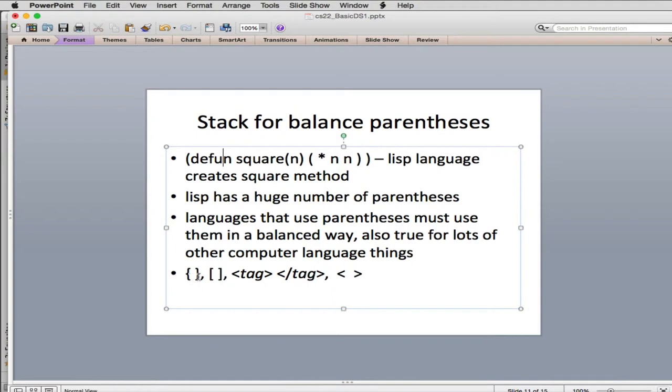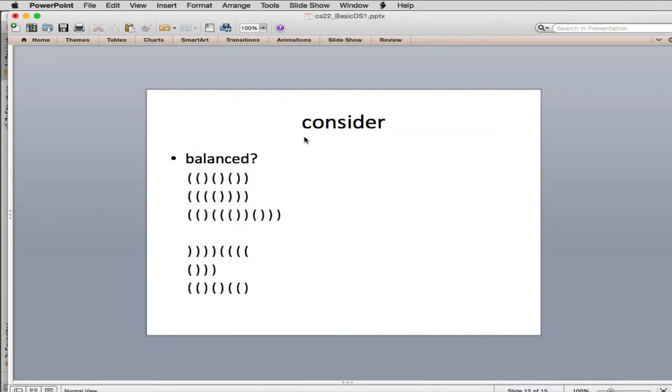You might nest them inside each other. When you look at this example up here, this pair of parentheses is nested inside of another one. In balanced parentheses, you always have a matching closing parentheses. These two match, these two match, these two match, and these two on the outside surround all those. That's a matched set of parentheses.